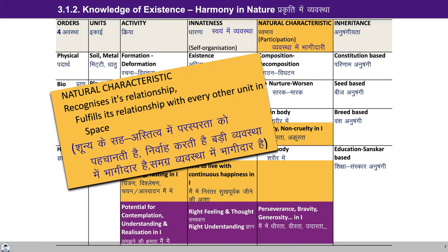We can see that natural characteristic is to recognize the relationship and fulfill the relationship with every other unit in space. And this is by virtue of the unit being submerged in space. So we studied about the submergence — these three things: that every unit being in space is energized, self-organized, and recognizing its relationship with other units and fulfilling it. And now we can relate it to the activity, innateness and natural characteristic of every unit in different orders.